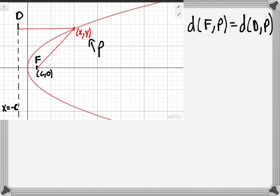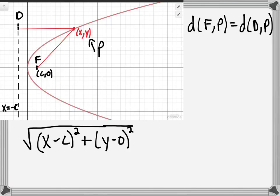We begin with the distance from F to P. Using the distance formula with two points, it's the difference of the x-values squared plus the difference of the y-values squared: √((x-c)² + (y-0)²).